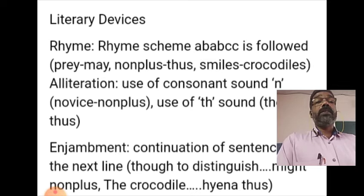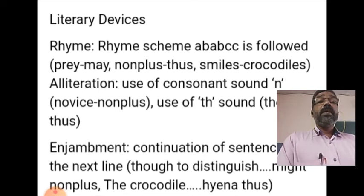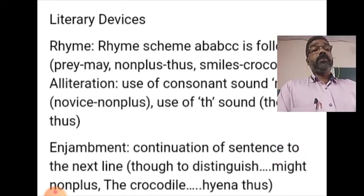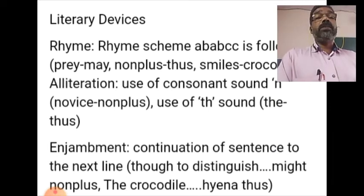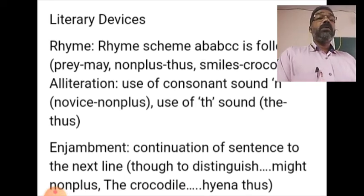Now let us see the literary devices used in this stanza. The rhyme scheme is the same as the above stanzas: A-B-A-B-C-C. Another literary device used is alliteration — the use of the consonant sound N at the beginning of two consecutive words: 'novice' and 'non-plus.' Both words begin with the consonant sound N.